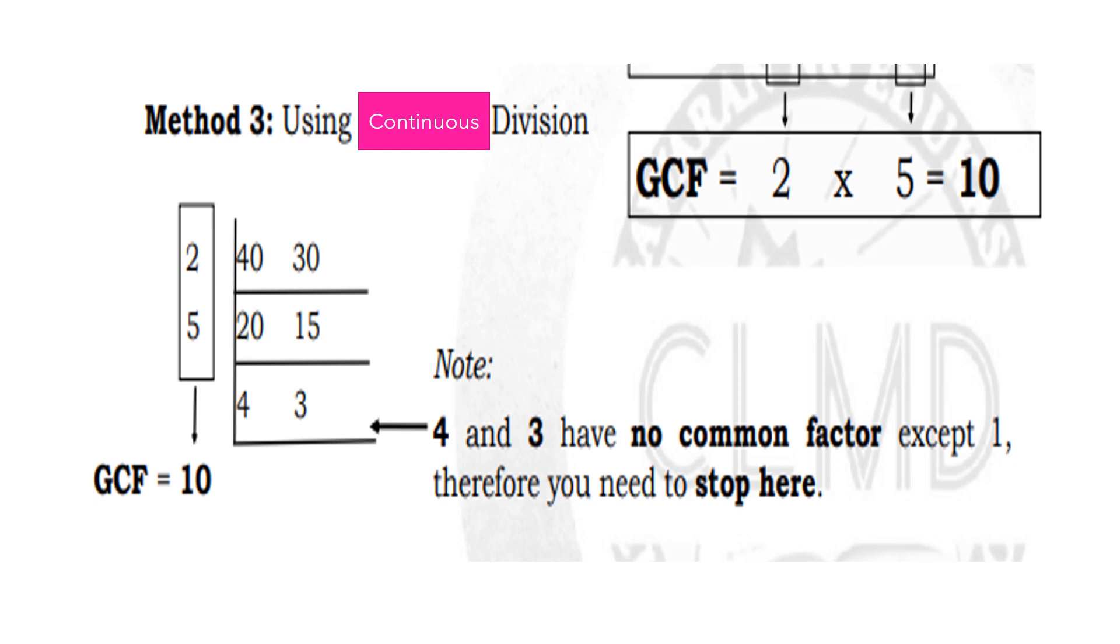Since 4 and 3 have no common factor except 1, therefore, you need to stop here. 4 and 3 have no common divisor except 1. So, since 1 is the only remaining number you can use, stop there. Next, you need to multiply 2 and 5. 2 times 5 equals 10. Therefore, the GCF of 40 and 30 is 10.